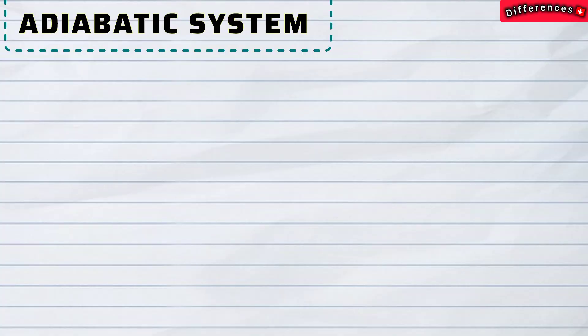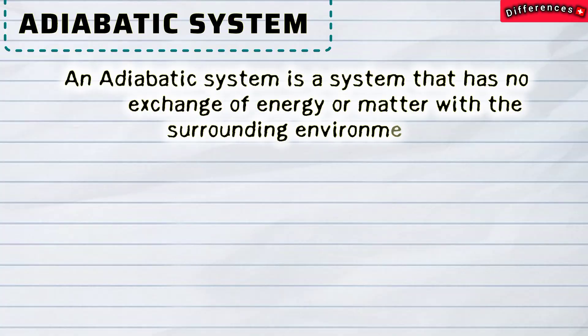Adiabatic system: an adiabatic system is a system that has no exchange of energy or matter with the surrounding environment.